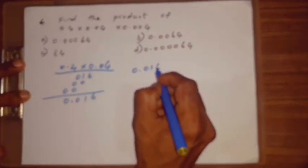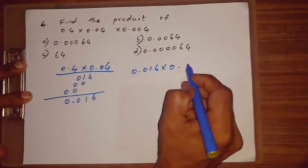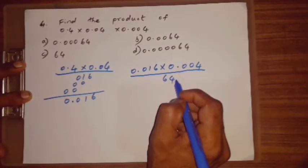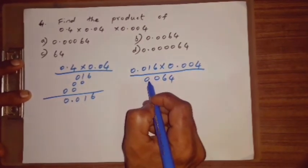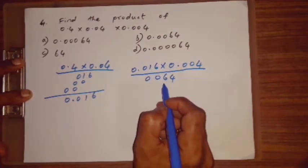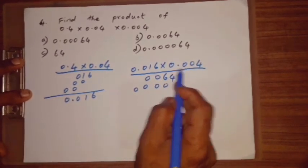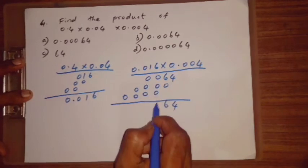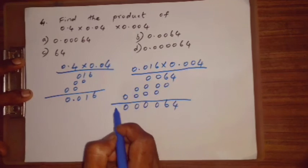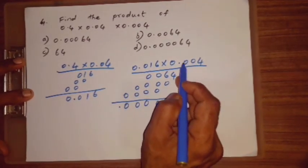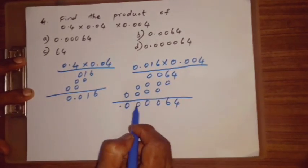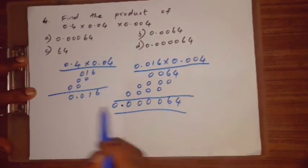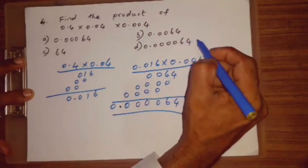0.016 x 0.004. Even 4, 6's are 64. 0, 4, 0. Another 0, 6, 0. 0, 0, 0. Another also 0, 0, 0, 0. So 4, 6, 0, 0, 0, 0. Another one here Point 1, 2, 3, 4, 5, 6. Is 1, 2, 3, 4, 5, 6. Point 1.0, 0, 0, 0, 0, 0, 0, 6 for. D is the correct answer. We'll see you next time.